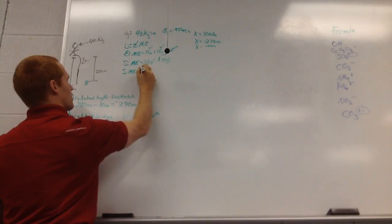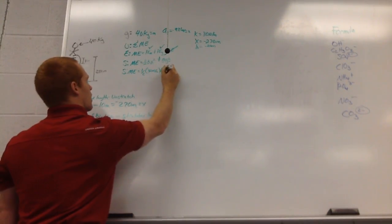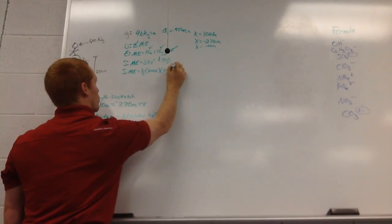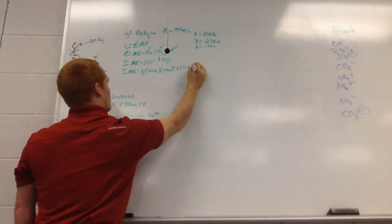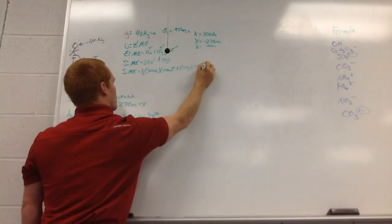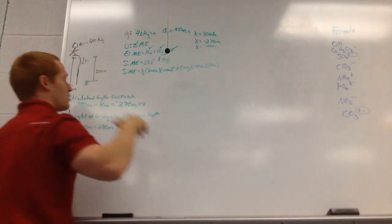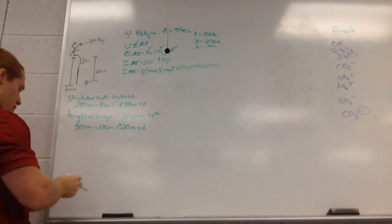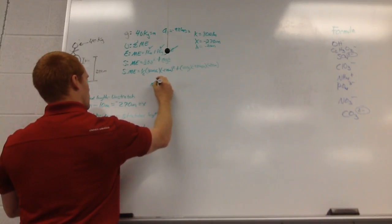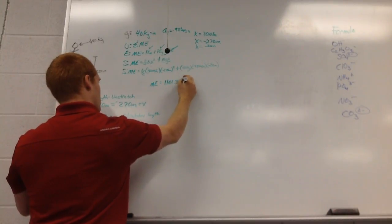Mechanical energy equals one half times 30 newtons per meter times negative 270 meters squared, plus 40 kilograms times negative 9.81 meters per second squared times negative 20 meters. When you plug all of that into your calculator, mechanical energy equals 1,101,348 joules.